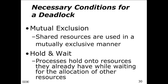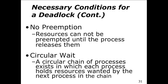Necessary conditions for a deadlock: mutual exclusion on a shared resource, a hold-and-wait condition where processes hold resources while waiting for others, no preemption where resources can't be taken until the process releases them — preemption means stopping, so non-preemptive processes can't be stopped — and circular wait, which is a chain of processes where each holds a resource wanted by the next.